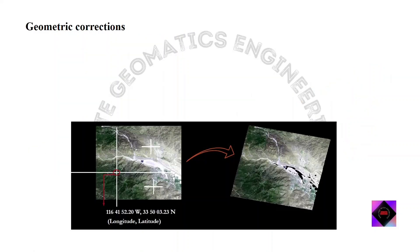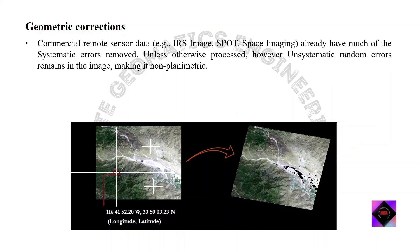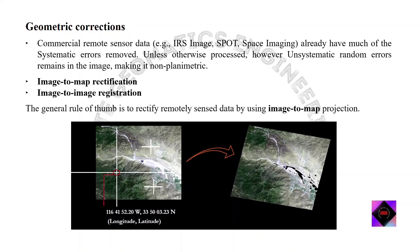Commercial remote sensor data, for example IRS and SPOT images, already have much of the systematic errors removed during processing. However, unsystematic random errors remain in the image, making it non-planimetric — meaning pixels are not in their correct XY coordinates. The two common geometric correction procedures used by scientists are image to map rectification and image to image registration. The general rule is that to rectify remotely sensed data we use image to map projection, so most discussion will focus on image to map rectification.